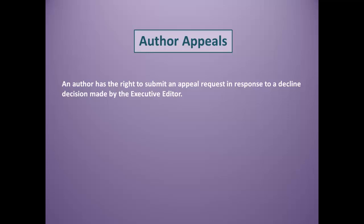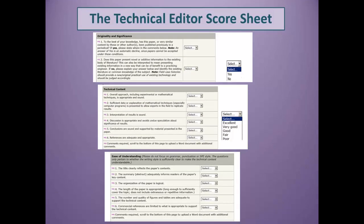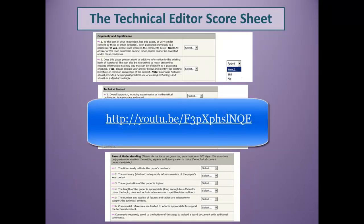When a paper is declined, the author has the right to submit an appeal request. Appeals are handled by the editor-in-chief, and the decision of the editor-in-chief is final. The technical editor score sheet is intended to provide an appropriate framework for evaluating a paper while also ensuring that the author receives clear, useful feedback on how the decision was reached. The key areas on which a paper is evaluated are originality, significance, technical content, and ease of understanding.